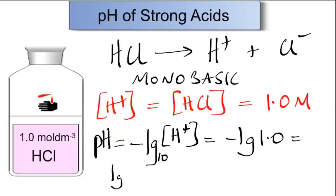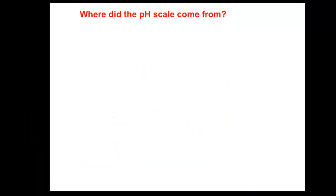It's worth pausing to see the influence of taking logs of small and large numbers. The log of a very small number, 10 to the minus 18, turns out to be simply minus 18. Returning to our problem, the log of 1 is the same as the log of 10 to the 0, so the pH turns out to be 0.